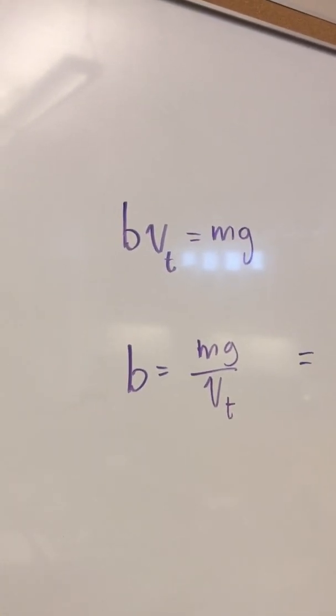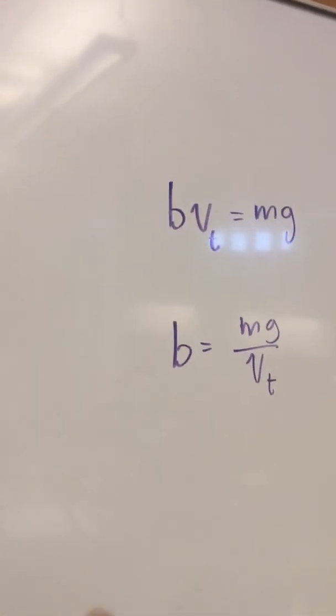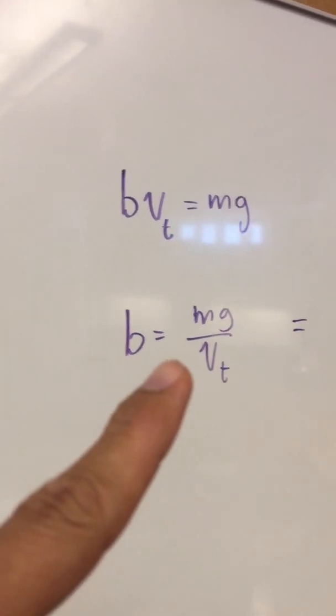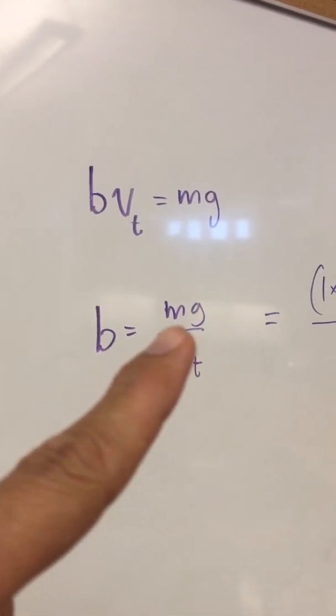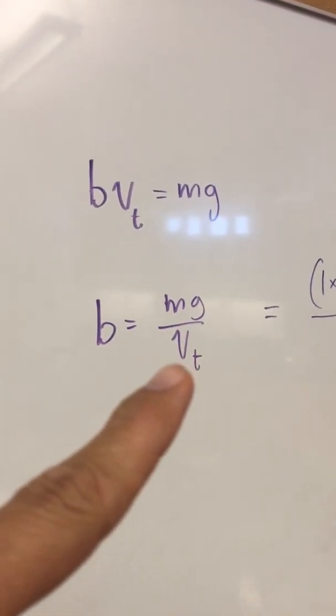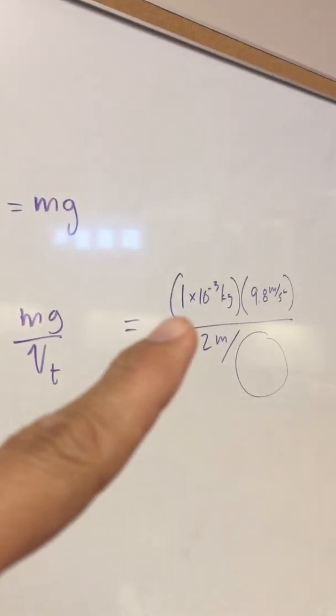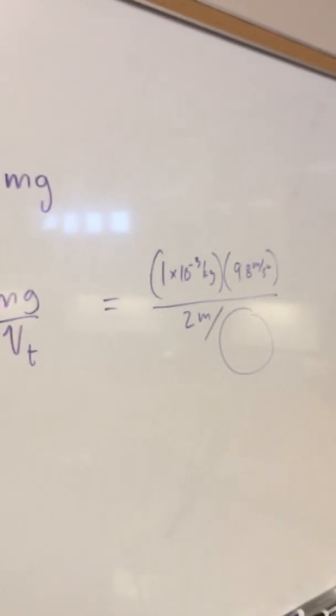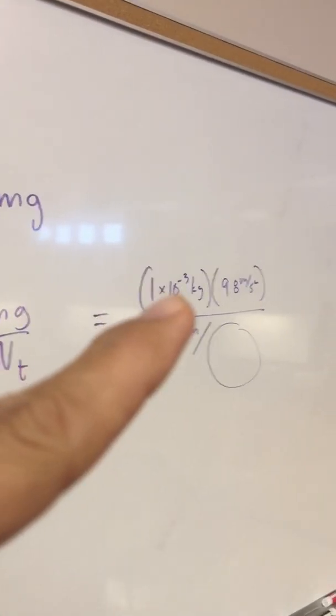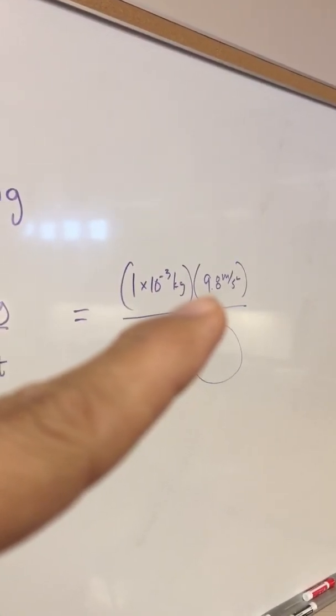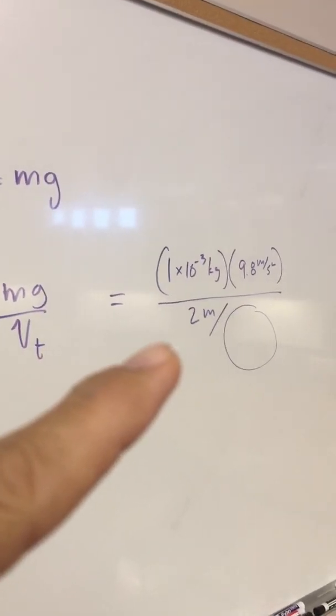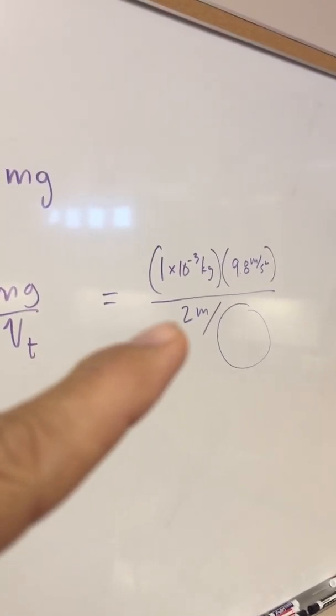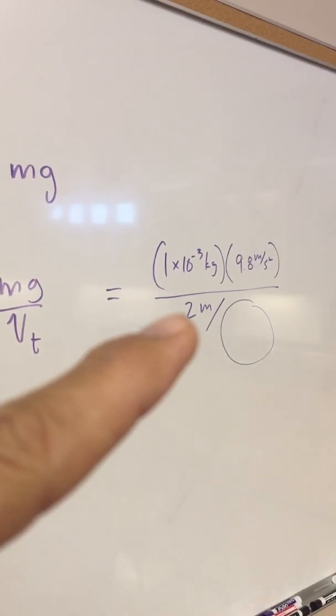So the experiment we can do is one in which we try to solve for the value of the drag coefficient for a coffee filter. We need to divide the weight of the coffee filter by its terminal velocity. Well a single coffee filter is about one gram, one times ten to the negative third kilograms, and g is of course nine point eight meters per second squared. So to get terminal velocity we're going to time a coffee filter falling for a distance of